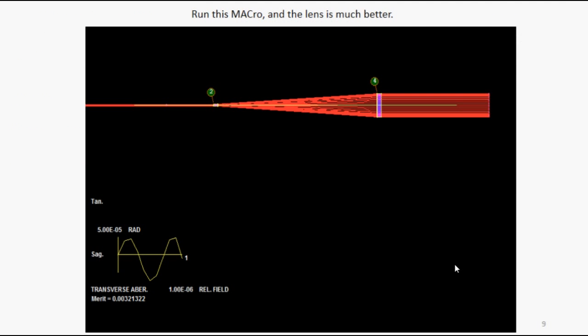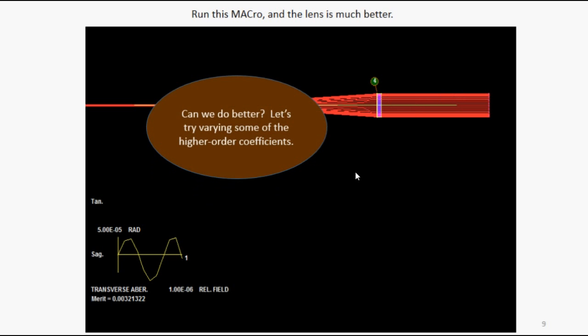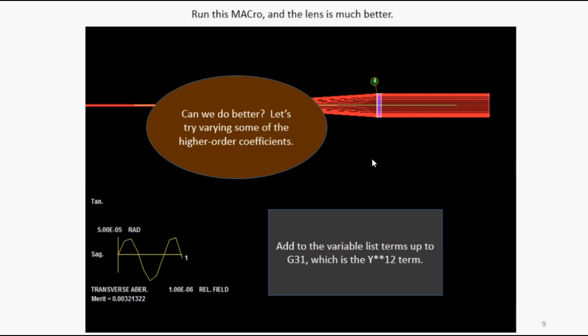Okay, we run this macro and the lens is indeed much better. The light is collimated coming out. And if you look at how the rays are distributed here, they're all scrunched together at the edge and they're more spread out in the middle. And that's exactly what you want to do to try to make it more uniform. But we always have to ask, can we do better? Let's try varying some of the higher order coefficients. So we added to the variable list terms up to G31, which is the Y12 term. And when we do that, we find nothing changed much. We really had a pretty good design.